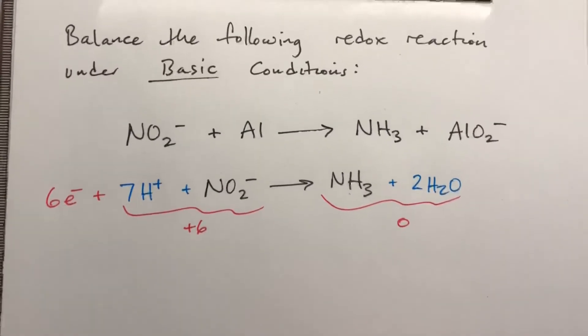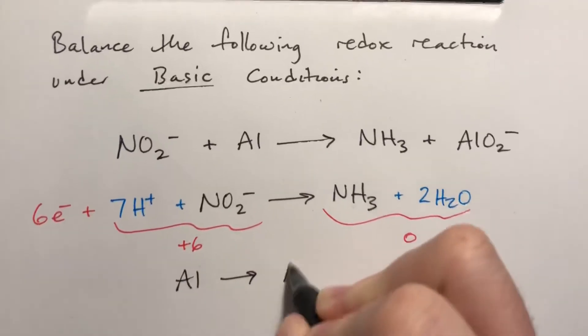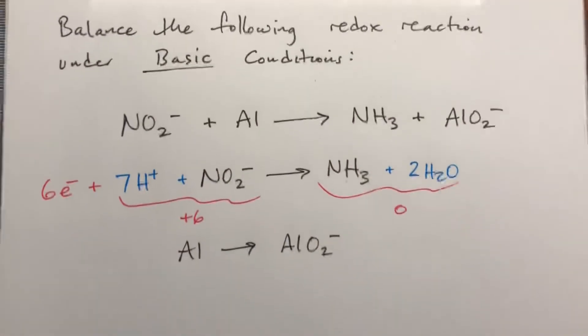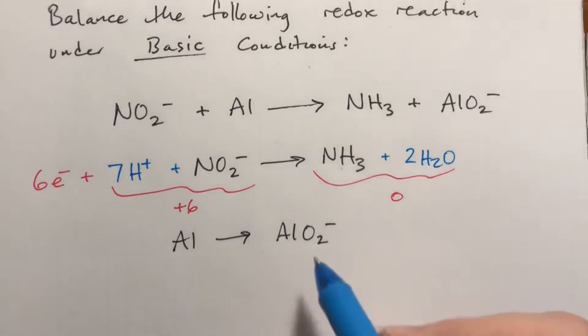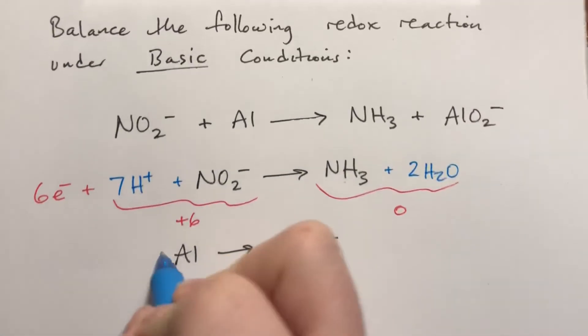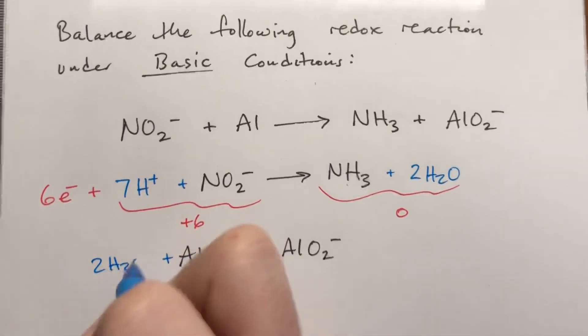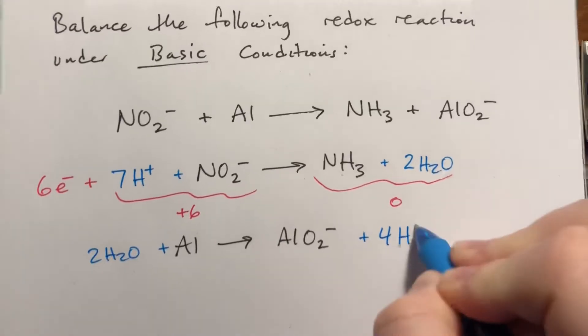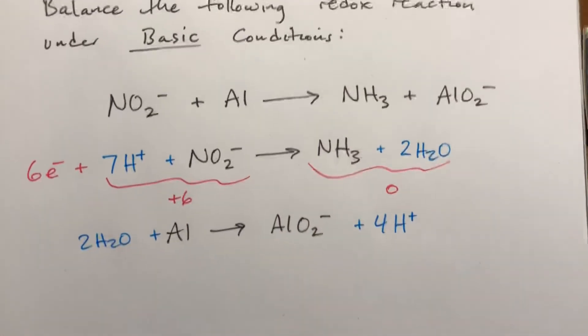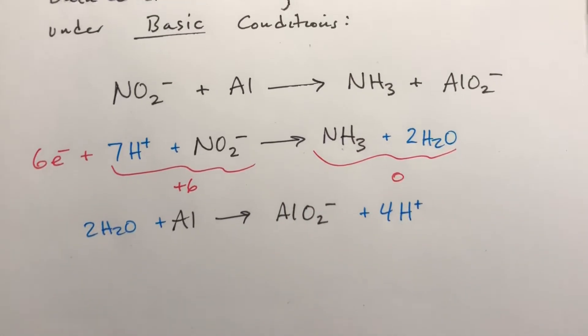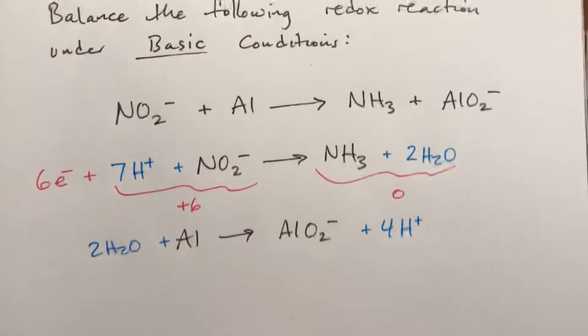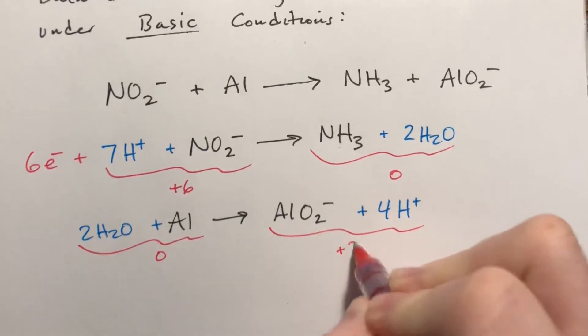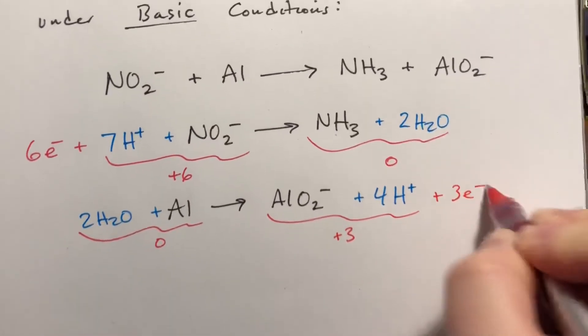Okay, now we're gonna do the other half reaction. Aluminum becoming AlO2 minus. We are going to assume acidic conditions for right now. We have two oxygens, so we need two waters to get our two oxygens on this side. That gives us four hydrogens, so we're gonna do four H pluses here. Now we need to figure out what the charges are. So this side adds up to zero, this side adds up to four minus one is plus three, which is three electrons on that side.